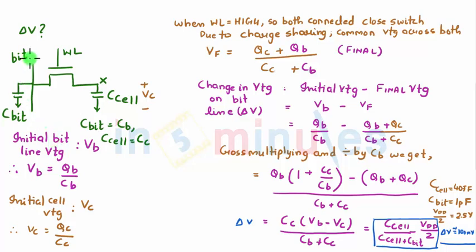Initially let's assume the voltage present on bit line was VB. In this entire mathematics I'm going to represent C bit as CB and C cell as CC. Initial voltage on the bit line was VB. We know that Q equals CV, so we can easily write VB equals QB by CB, and this is the charge present on the bit line and this is the capacitance of the bit line.